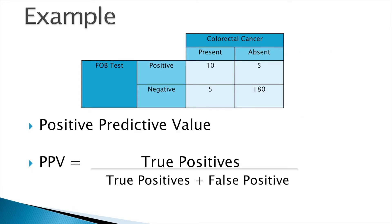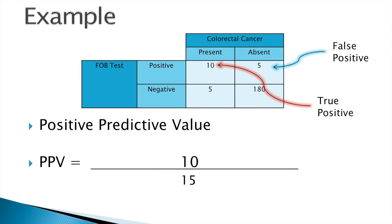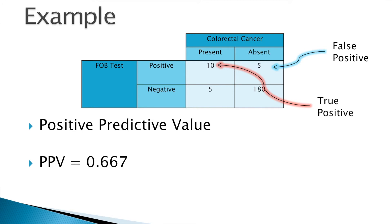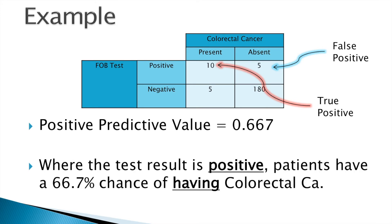Moving on now to predictive values, let's look at positive predictive value. Positive predictive value is the true positives divided by the true positives plus the false positives. We identify the true positives and the false positives, putting them into our equation. The positive predictive value, when calculated, is 0.667, meaning that where the test result is positive, patients have a 66.7% chance of having colorectal cancer.